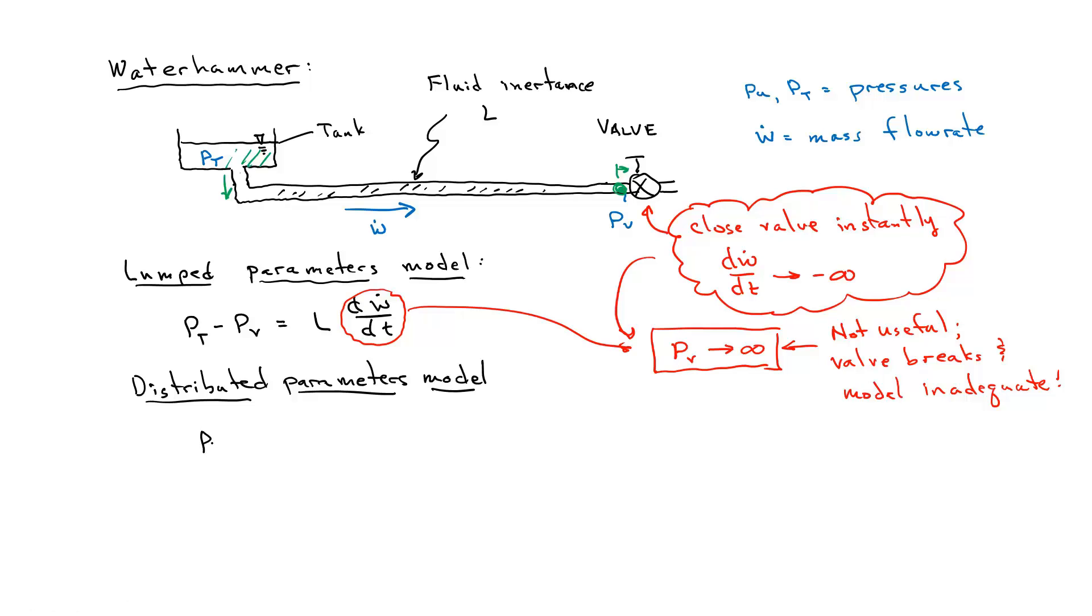In this model it turns out that the valve pressure is proportional to the speed of sound times the fluid velocity before I close the valve. So this is the product of sound speed times the original velocity. Sound speed is kind of a measure or an indicator of how compressible a fluid is. If a fluid is fairly compressible, it'll have a low sound speed. If it's incompressible, it'll have a high sound speed.